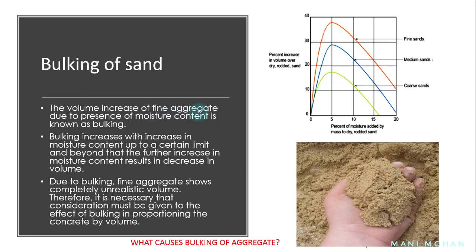Bulking of sand: the volume increase of fine aggregates due to presence of moisture content is known as bulking. Bulking increases with increase in moisture content up to a certain limit, and beyond that, further increase in moisture content results in a decrease in volume. It should be noted that the finer the particle, the more the bulking. The moisture present in aggregate forms a film around each particle, and these films exert a force known as surface tension, causing each particle to move away from each other, hence causing bulking.